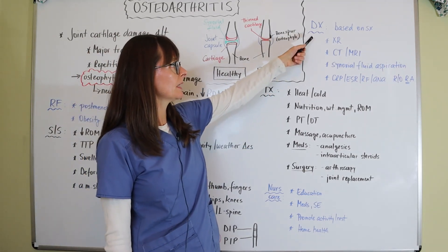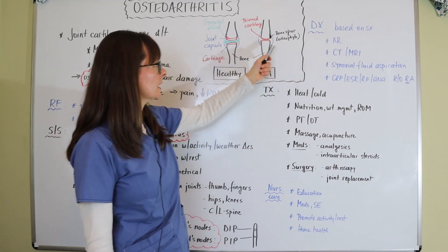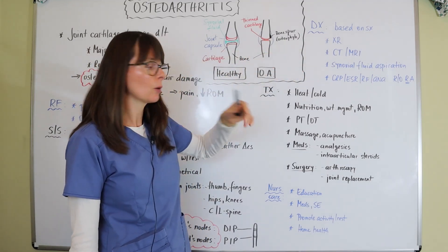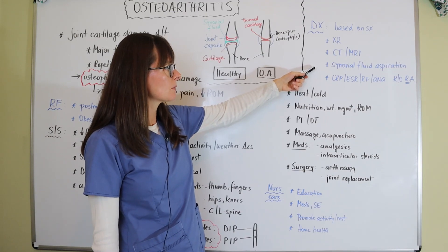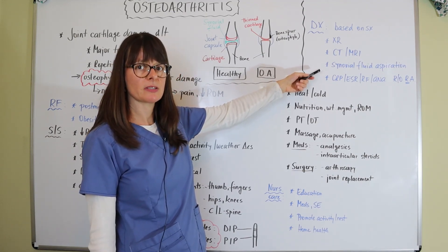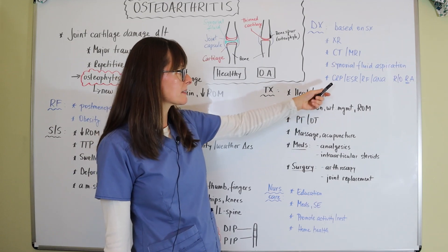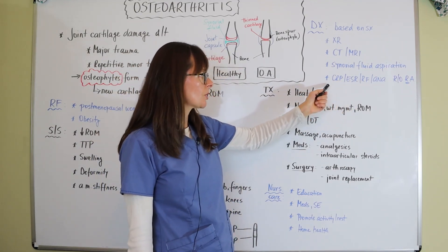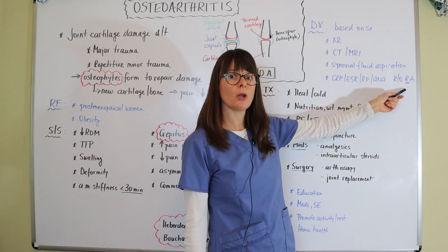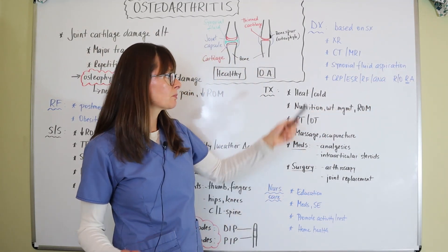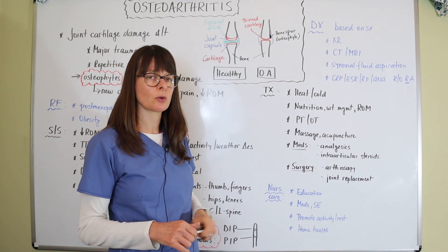For diagnostic tests, diagnosis is typically made based on the patient's symptoms. Sometimes an x-ray is ordered, which can show joint space narrowing and bone spurs. CT or MRI can also be helpful. Synovial fluid aspiration is done mostly to rule out rheumatoid arthritis, which is more of an inflammatory disorder and the fluid would reflect that. Blood tests — CRP, ESR, rheumatoid factor, and ANA — are mostly inflammatory markers used to rule out rheumatoid arthritis. In osteoarthritis, these markers are usually normal, whereas in rheumatoid arthritis they would be elevated.